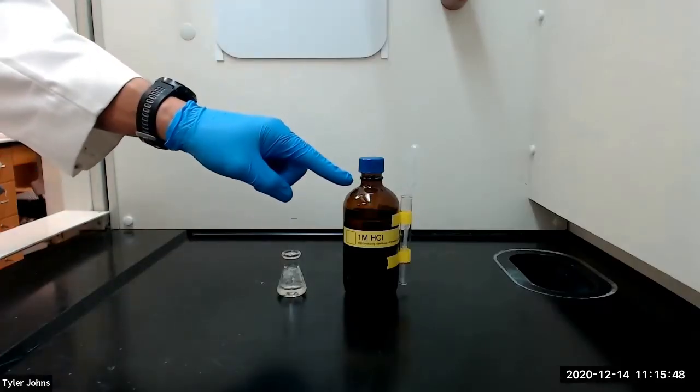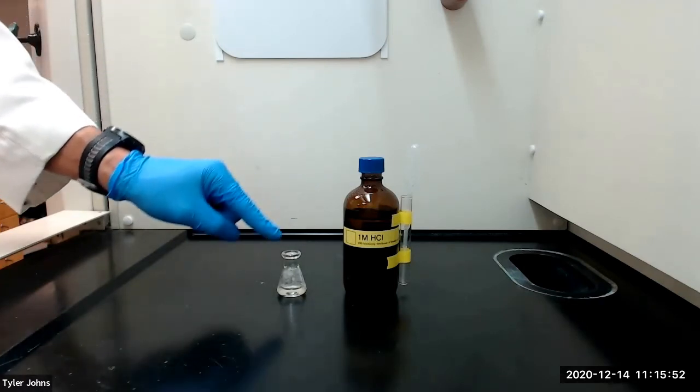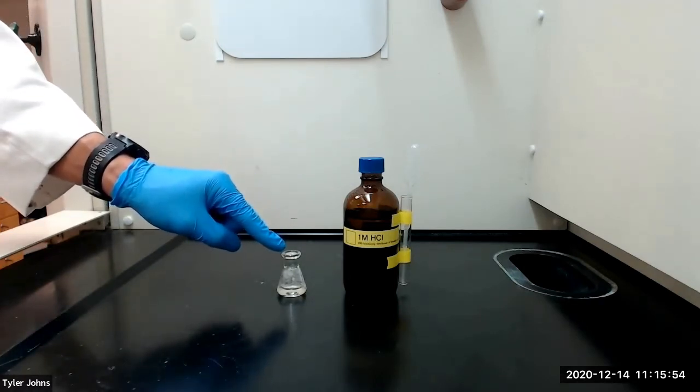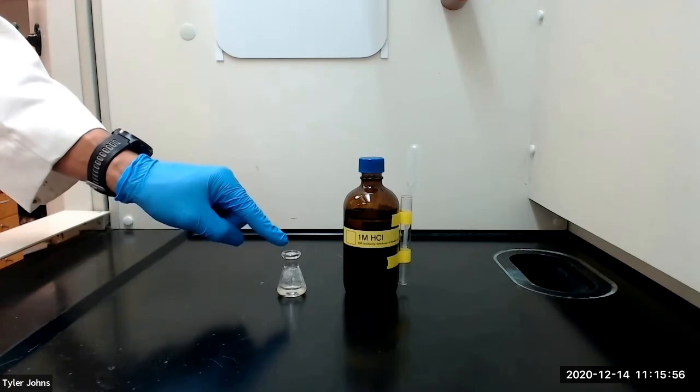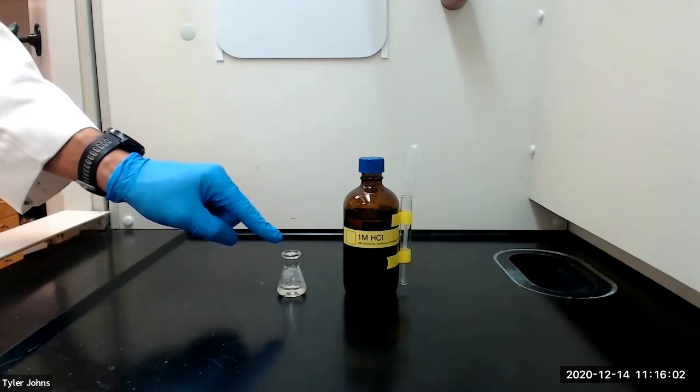We will next add 0.5 milliliters of one molar hydrochloric acid dropwise to the solution with swirling. As the solution becomes acidic, solid benzylic acid will begin to precipitate. The final pH of the solution should be about 2.